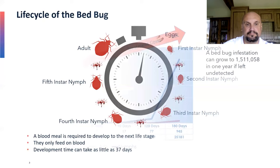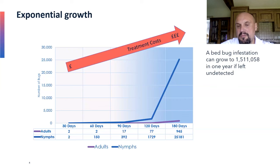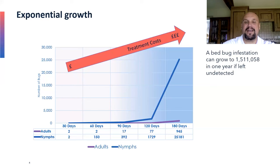Looking at exponential growth — this graph shows what happens over time and how many adults and nymphs we get. At 30 days it's quite low. When we get to 90 days, we're looking at 17 adults and 392 nymphs. When we get to 180 days, we've got a massive population: 945 adults and 25,181 nymphs. This is quite a major thing that can happen over 180 days if left unchecked and untreated.